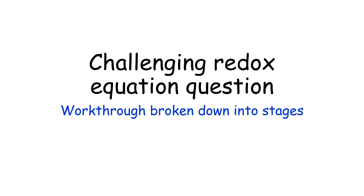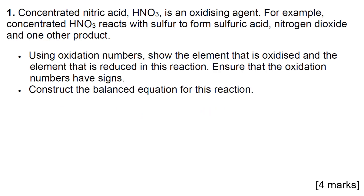Hello and welcome to this look at a challenging redox equation question with a work through broken down into stages. This is a bit challenging because not only is there a missing product, there's also the fact it's just given you word descriptions of what's happening. What they want you to do first of all is use oxidation numbers to show the element that is oxidized and the element that's reduced, using the oxidation number signs as well.